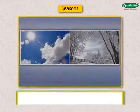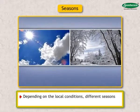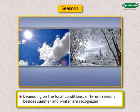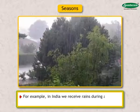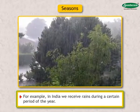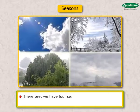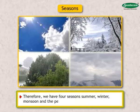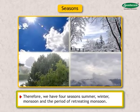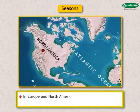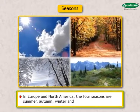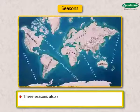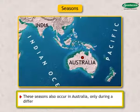Let us get some more information on seasons. Depending on the local conditions, different seasons besides summer and winter are recognized in different regions. For example, in India, we receive rains during a certain period of the year. Therefore, we have four seasons: summer, winter, monsoon, and the period of retreating monsoon. In Europe and North America, the four seasons are summer, autumn, winter, and spring. These seasons also occur in Australia, only during a different period.